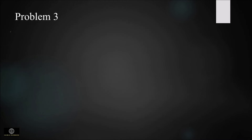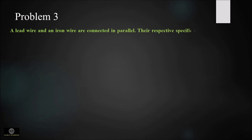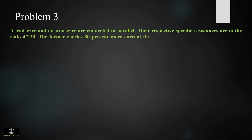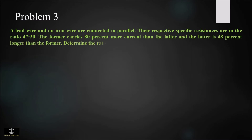In the third problem, a lead wire and an iron wire are connected in parallel and their respective specific resistances are given in the ratio 47 to 30. The former carries 80% more current than the latter, and the latter is 48% longer than the former. We have to determine the ratio of the cross-sectional areas.